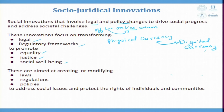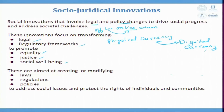Many people did not accept digital currency so easily, but slowly, including myself, I have started enjoying digital currency — paying through digital money is becoming more and more easy for me. So this is a policy change. When the policy is changed, it aims at creating and modifying laws, regulations and policies to address social issues and to protect the rights of individuals and communities. Trying to come up with an innovative solution to fulfill unmet needs of society is nothing but socio-juridical innovation.